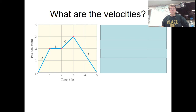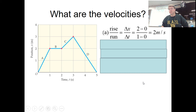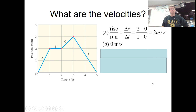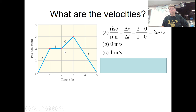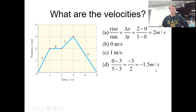Here are some more practice problems. Find the average velocity for each line segment. For segment A: rise over run is 2 meters divided by 1 second, so 2 meters per second. For segment B: rise over run is 0 over 1 second, so 0 meters per second. For segment C: 1 meter over 1 second gives 1 meter per second. For segment D: the answer is negative 1.5 meters per second.